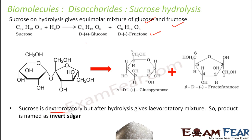Sucrose is dextrorotatory, but after hydrolysis it gives a levorotatory mixture. Both glucose and fructose are levorotatory, so it is surprising that sucrose on hydrolysis gives two units which are both levorotatory. That is why the product is often known as invert sugar — the optical nature gets inverted.